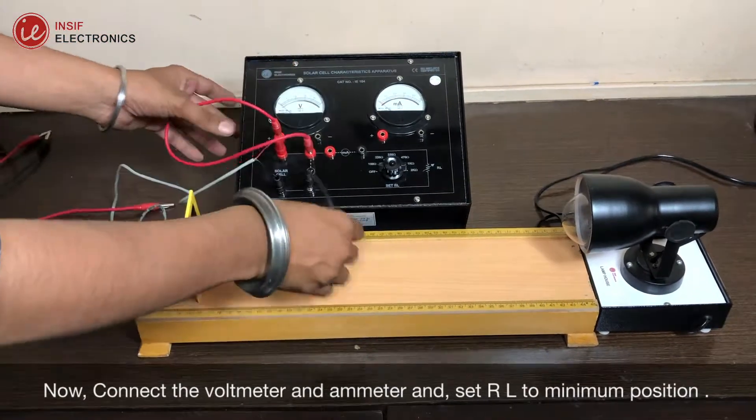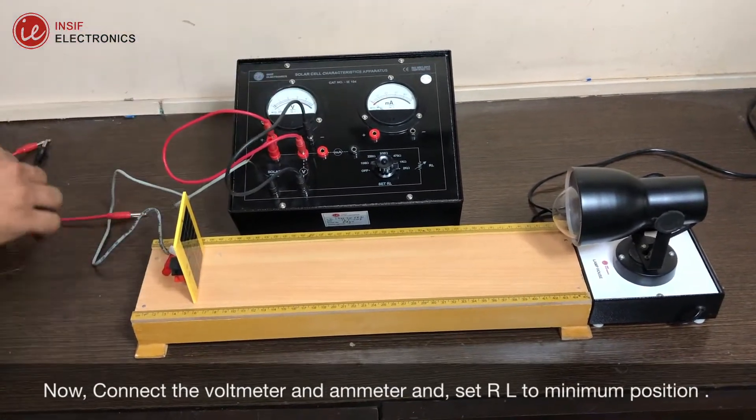Now, connect the voltmeter and ammeter and set RL to minimum position.